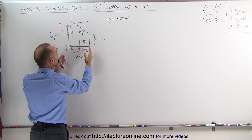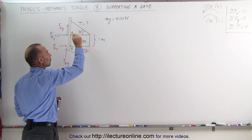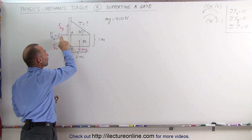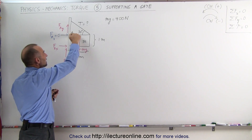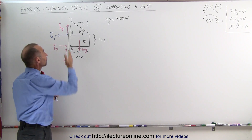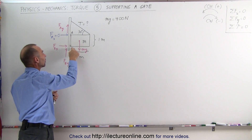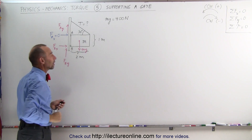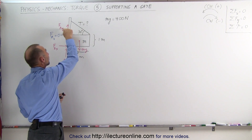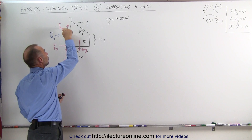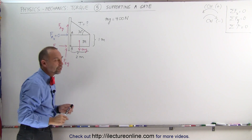The gate has dimensions 1 meter tall and 2 meters long. The tension in the cable is adjusted so that the horizontal force at A is equal to zero — there's no stress at hinge A in the horizontal direction. Only in the vertical direction. We assume there's a force in the vertical direction at B and a force in the horizontal direction at B as well. We're trying to find the tension in the cable and these three force components: the vertical component at A, and the horizontal and vertical components at B.